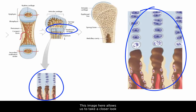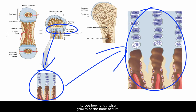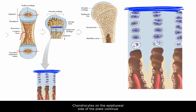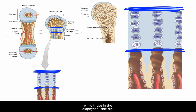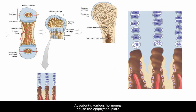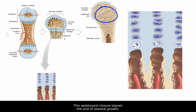This image here allows us to take a closer look at the epiphysial cartilage to see how lengthwise growth of the bone occurs. Chondrocytes on the epiphysial side of the plate continue to divide and enlarge while those on the diaphyseal side die. Osteoblasts migrate to this region and lengthen the bone by laying down more bone. At puberty various hormones cause the epiphysial plate to be fully replaced with bone. This epiphysial closure signals the end of skeletal growth.